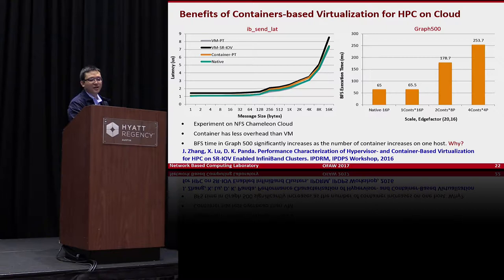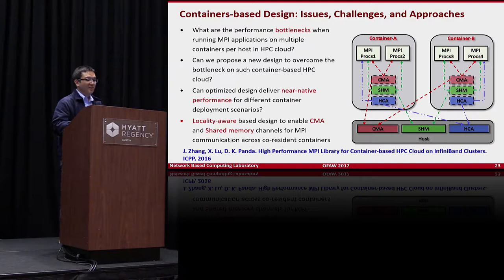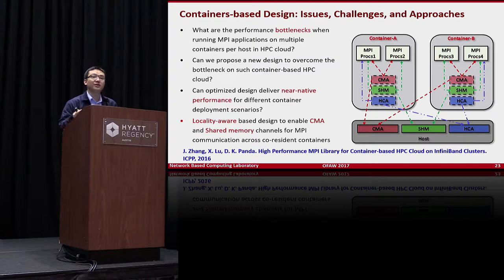We published a paper at ICPP last year. Through profiling, we found the main reason for degraded container performance is that due to namespace and PID isolation, the CMA channel is not being selected inside the container environment. We therefore proposed new locality detection designs for the container environment to detect co-location and enable CMA, along with tunings specific to Docker and Singularity environments.